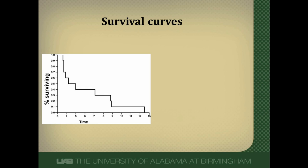Now let's talk about survival curves. Survival curves plot the percent having some outcome — here survival on the y-axis — against time on the x-axis. The line plotted shows the percentage of patients at each point in time that are still surviving, or alternately that have died. A commonly reported outcome is median survival: the point at which 50% of patients have died or 50% are still alive. You find this by drawing a line across at 50% and down to the time axis — in this survival curve, median survival is a little over four years.